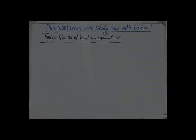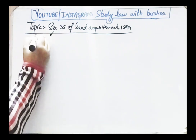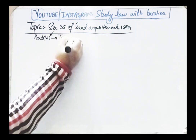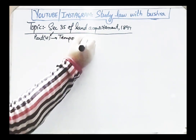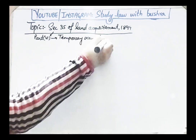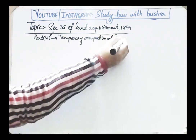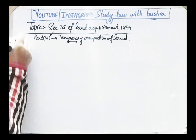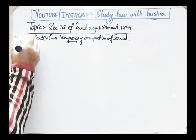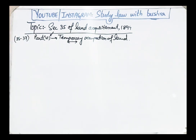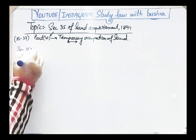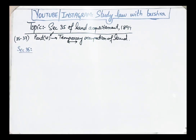In today's video we will discuss Part 6 of the Land Acquisition Act 1894. This part deals with the topic of temporary occupation of land — یعنی عارضی طور پر کسی زمین کا قبضہ حاصل کرنا۔ The relevant sections are Section 35 to Section 37, which we will discuss one by one.